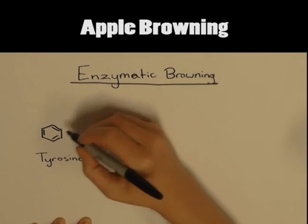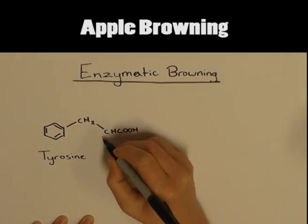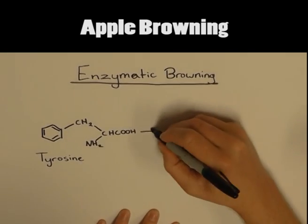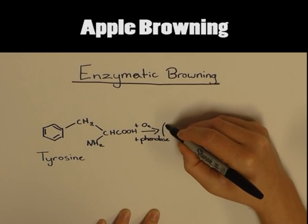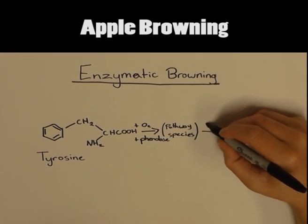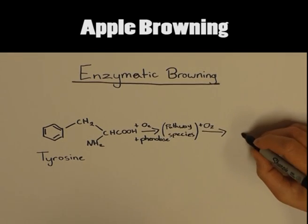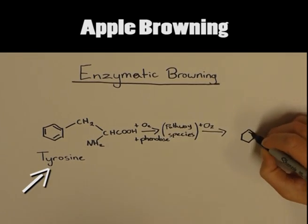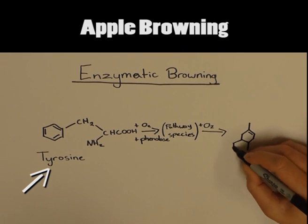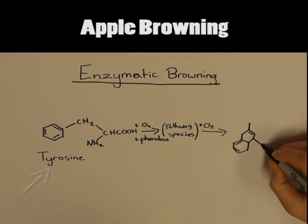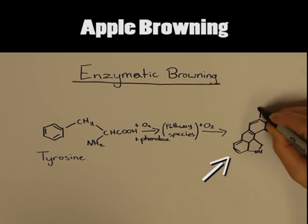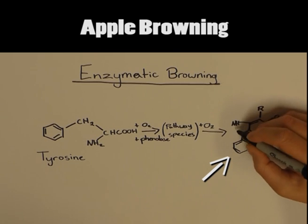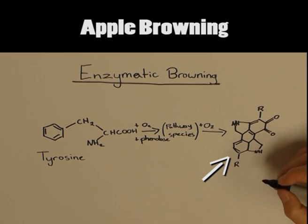When an apple is cut, phenylase, a naturally occurring enzyme in the cell, acts as a catalyst for the oxidation of the amino acid tyrosine. The final product of the enzymatic reaction is melanin, which has a dark brown color and results in what we see as apple browning.